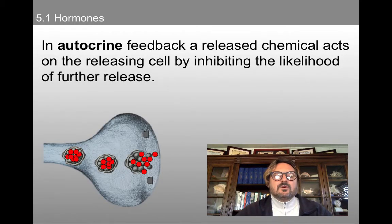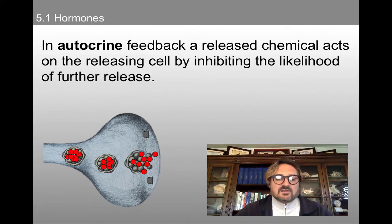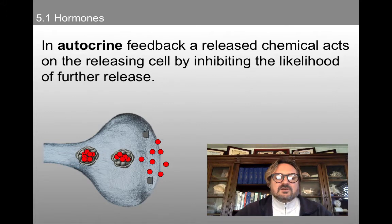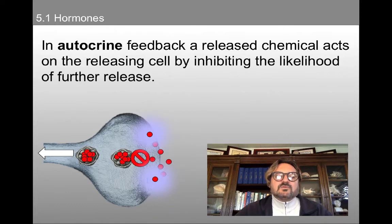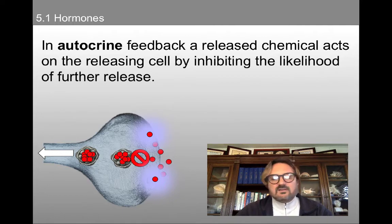This is how autocrine feedback works. Autocrine feedback is when a released chemical acts on the releasing cell by inhibiting the likelihood of further release. Here we can see our vesicles of neurotransmitter molecules — one of the vesicles is releasing its contents into the synapse, and it's going to travel down its concentration gradient until it actually goes back and activates these autocrine receptors on the presynaptic membrane. This inhibitory effect stops additional release of the neurotransmitter — it shuts itself off, kind of like the thermostat does.